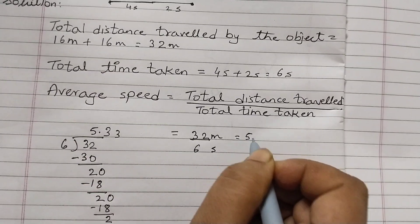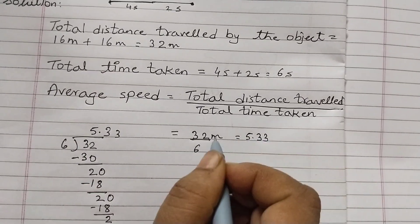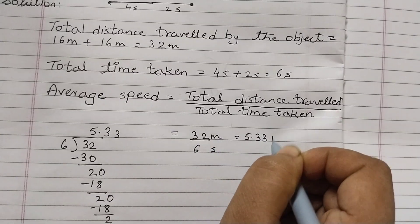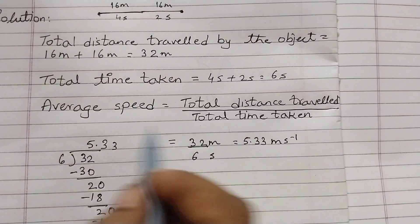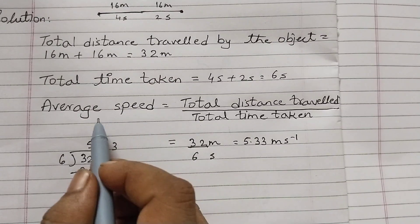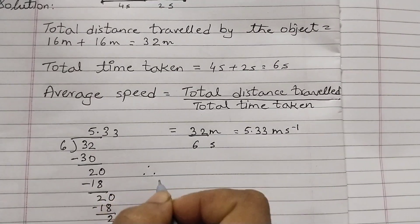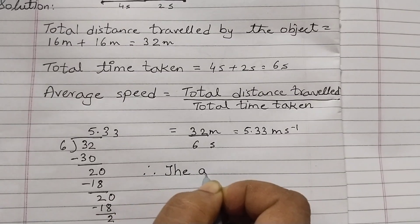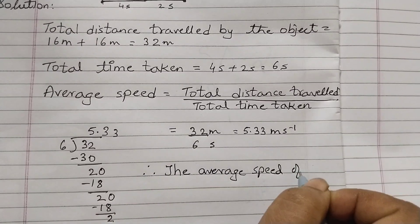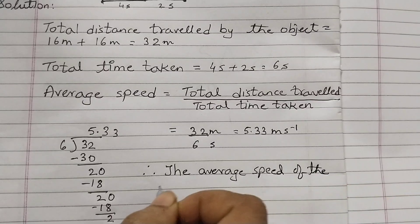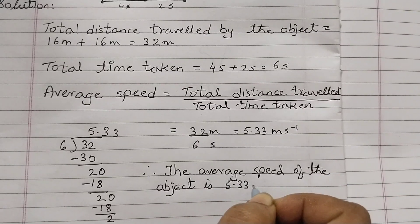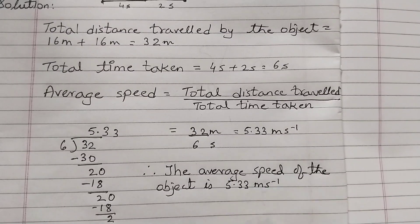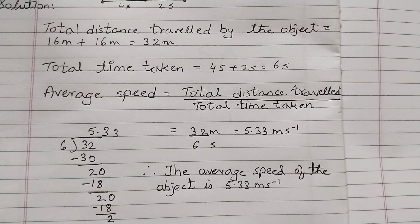Therefore, the average speed of the object is 5.33 meters per second. In the next video we shall do example number two.